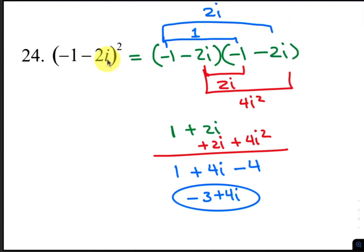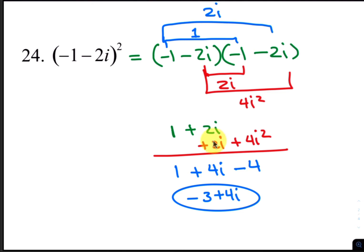For number 24, you're squaring negative 1 minus 2i, so multiply it times itself. Distributing: negative 1 times negative 1, negative 1 times negative 2i, negative 2i times negative 1, and negative 2i times negative 2i. The result is 1 plus 2i plus 2i plus 4i squared. 4i squared becomes negative 4, and 2i plus 2i is 4i. Combining 1 and negative 4 gives negative 3, so your answer is negative 3 plus 4i.